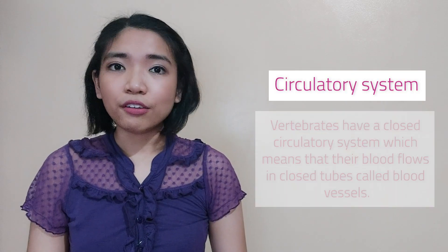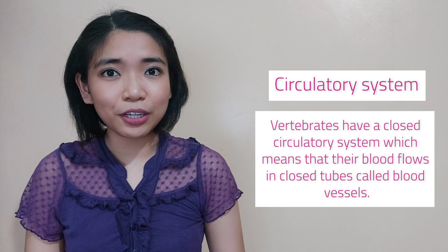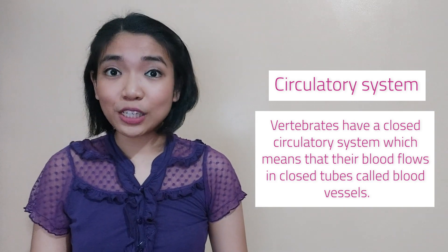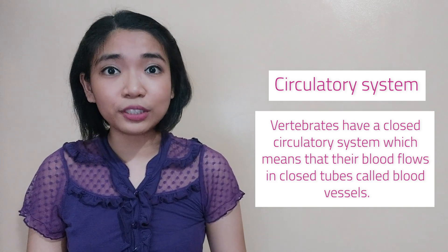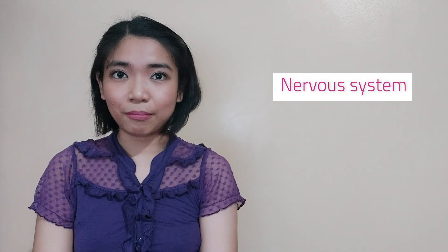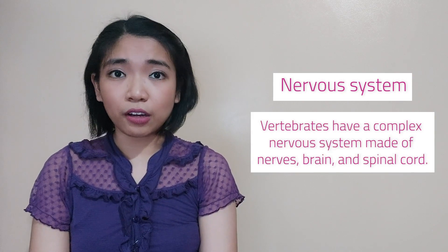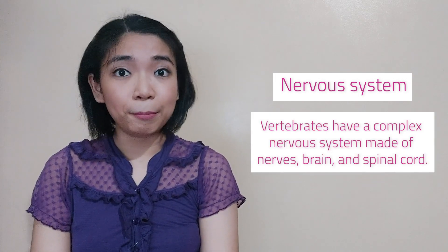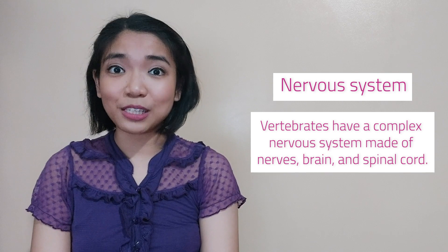Fifth, circulatory system. Vertebrates have a closed circulatory system, which means that their blood flows in closed tubes called blood vessels. Sixth, nervous system. Vertebrates have a complex nervous system made of nerves, brain, and spinal cord. The spinal cord is contained inside the spinal column and the brain is protected by the skull.